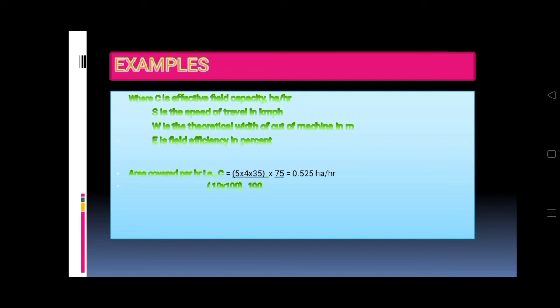Area covered per hour: C equals 5 times 4 times 35 divided by 10 times 100 times 75 divided by 100 equals 0.525 hectare per hour.